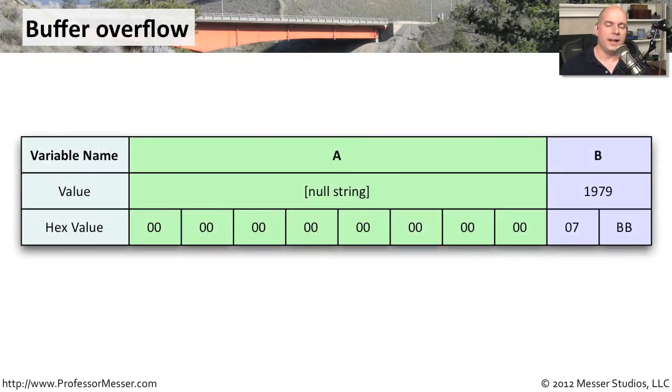Here's a very simplified view of what a buffer overflow might look like. We have two variables in our application, a variable A, and we have a variable B. The value that's currently in these applications, we're running this particular application that nothing has been put into variable A. But you can see 1979, a number has been added to variable B. And the hexadecimal representation of 1979 is 0, 7, bravo, bravo.